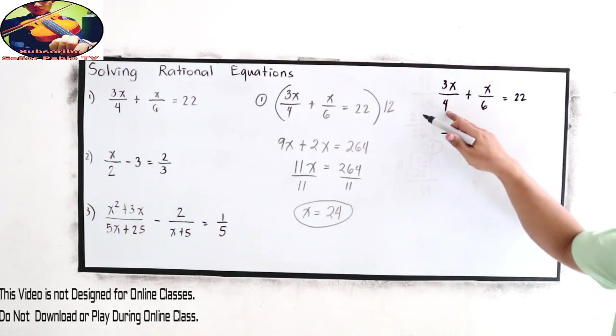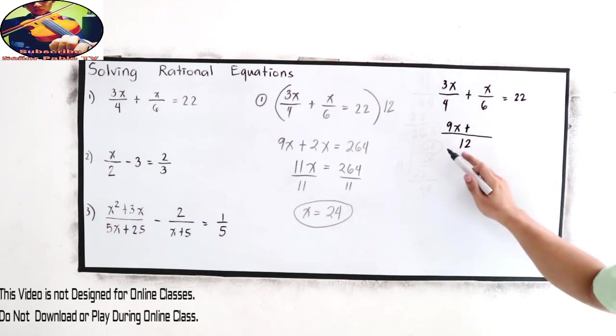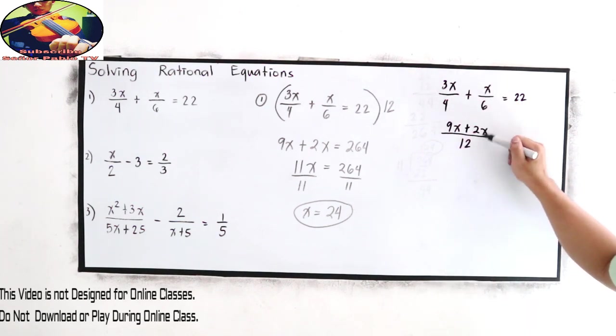4 and 6, that is 12. 12 divided by 4, that is 3 times 3x, that is 9x. Next, copy the plus sign. 12 divided by 6, that is 2 times x, 2x.